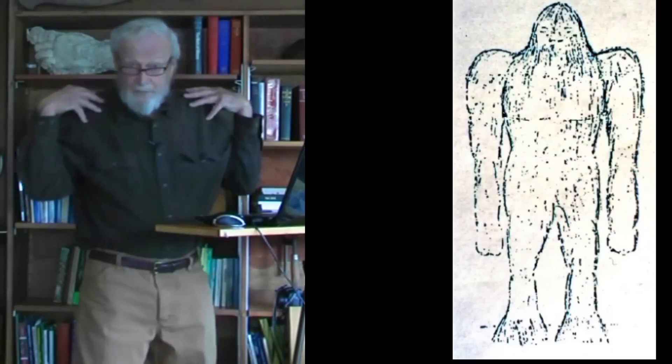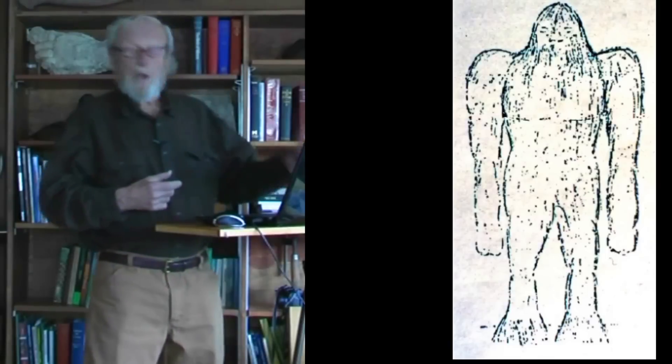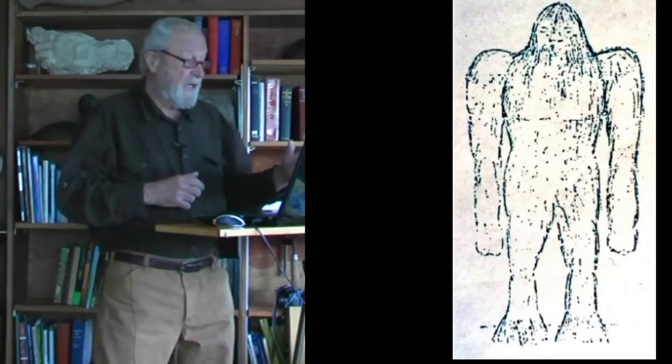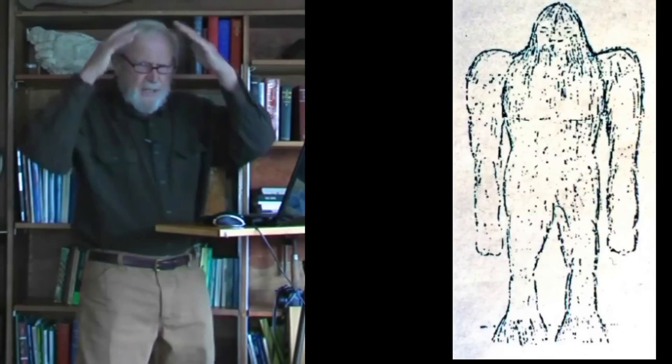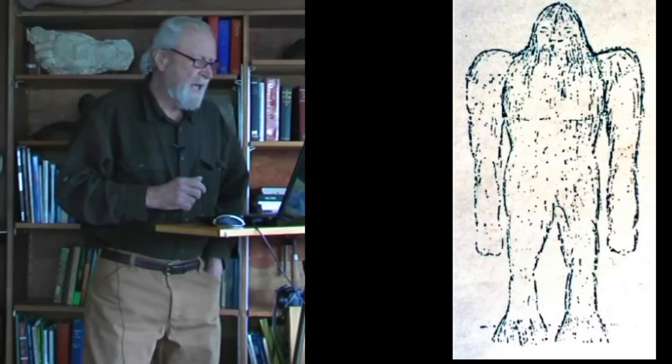We can see from this drawing from Oregon from the 1970s the broad shoulders, but note also the long arms and that short, thick neck, and in this case a tendency towards a somewhat pointed head.